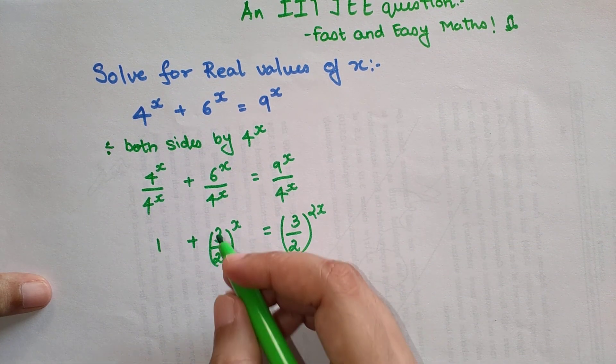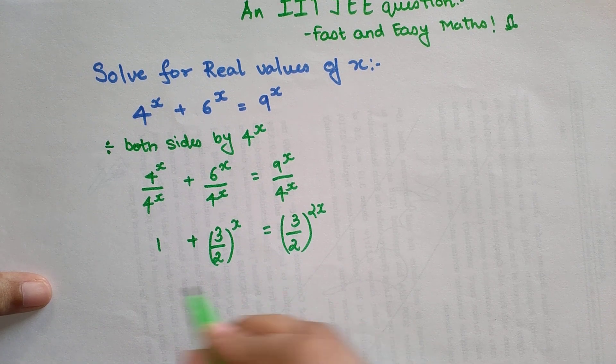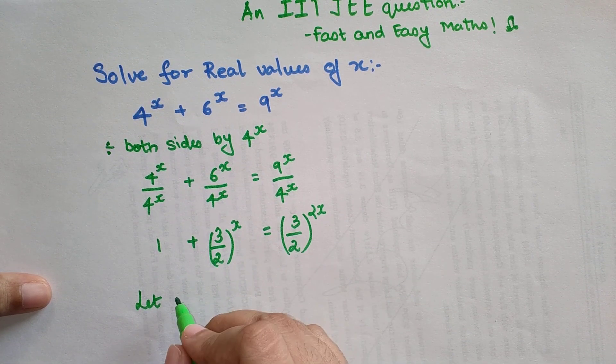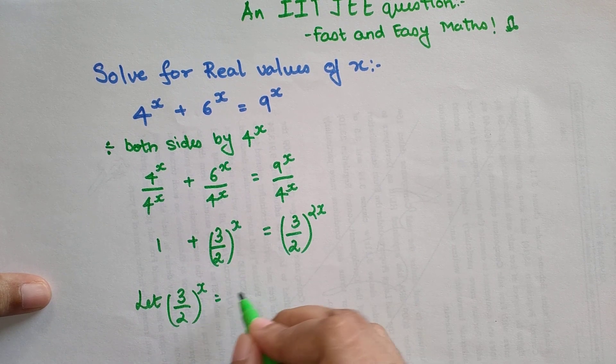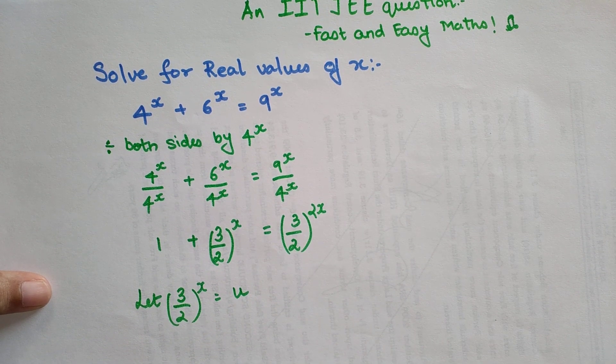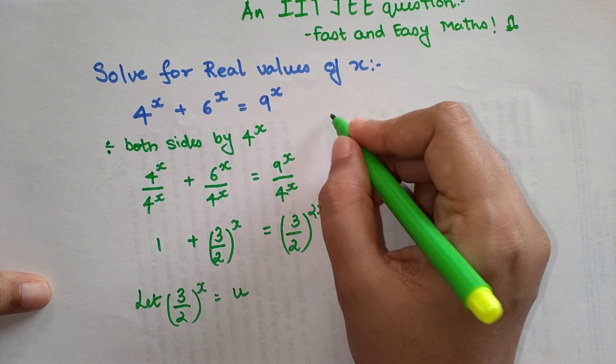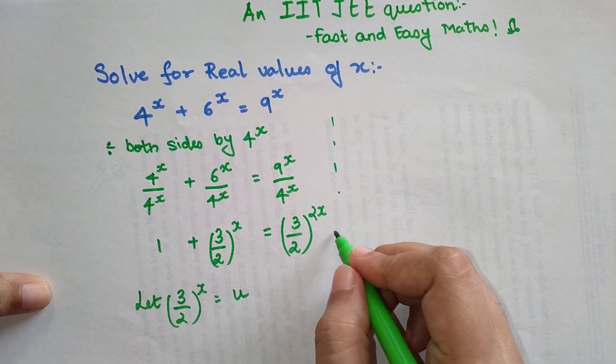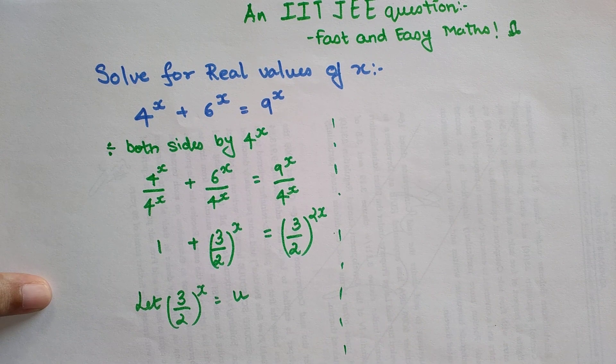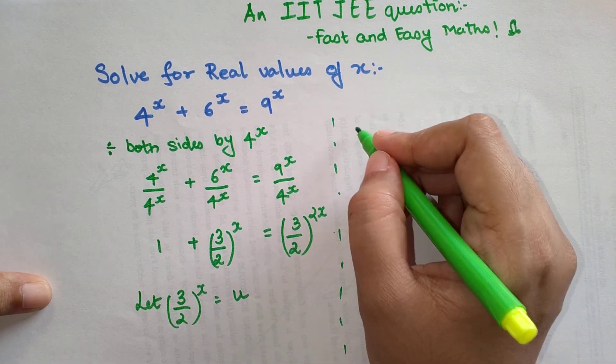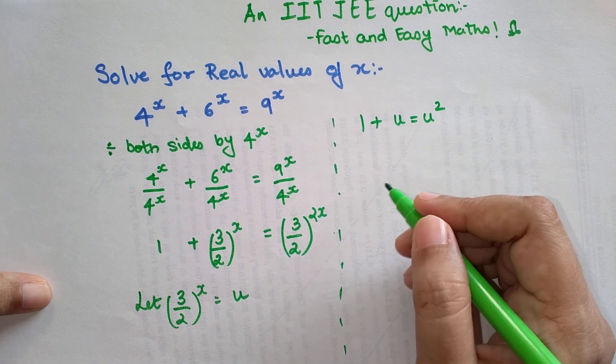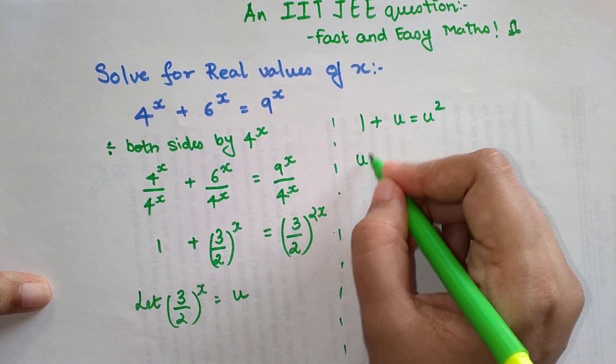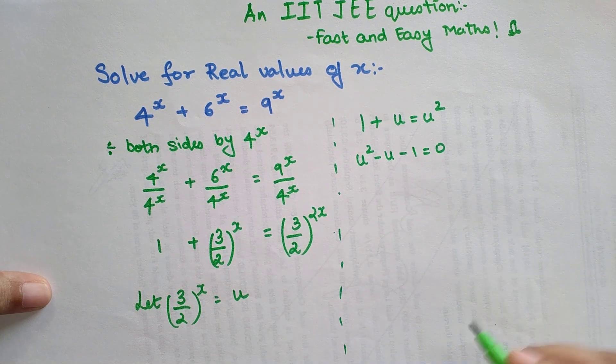In order to solve this further, let's take (3/2)^x as u. When I do that, my entire equation now changes to 1 + u = u^2. When you solve this further, you get u^2 - u - 1 = 0.